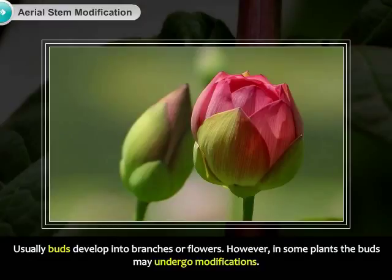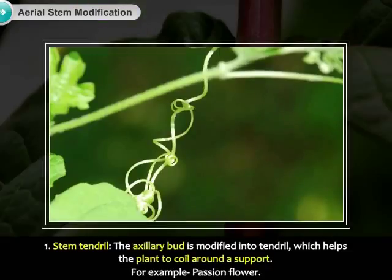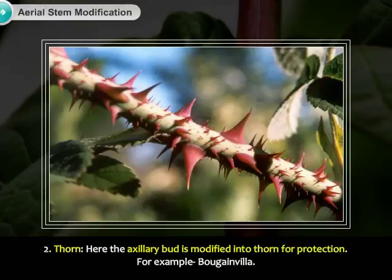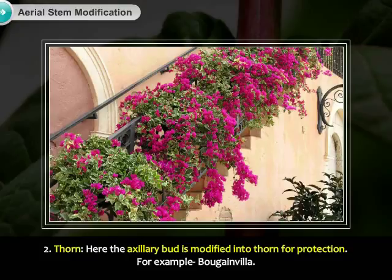Usually, buds develop into branches or flowers. However, in some plants, the buds may undergo modifications. 1. Stem tendril: The axillary bud is modified into a tendril, which helps the plant to coil around a support. For example, passion flower. 2. Thorn: The axillary bud is modified into a thorn for protection. For example, Bougainvillea.